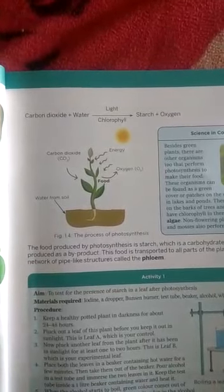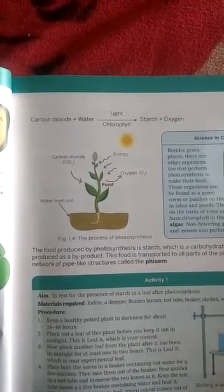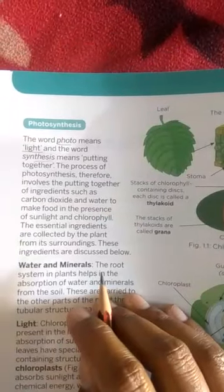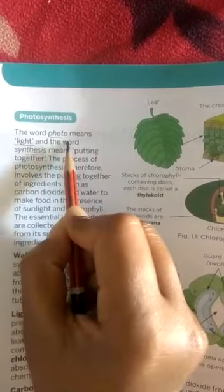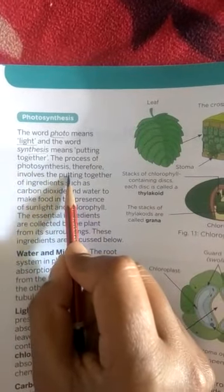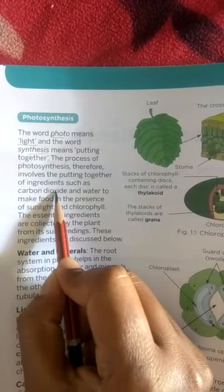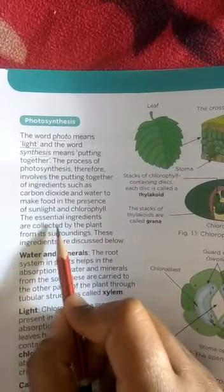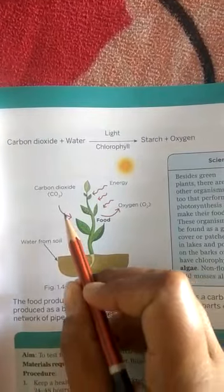Photosynthesis is a process in which plants prepare their food by using carbon dioxide and water in the presence of sunlight, forming their food with oxygen as a by-product. The word photosynthesis is made of two words: 'photo' meaning light, and 'synthesis' meaning putting together. So the process of photosynthesis involves putting together ingredients like CO2 and water in the presence of sunlight to form food. In this diagram you can see how the plants take in CO2.